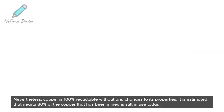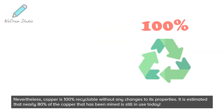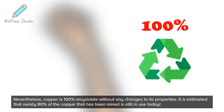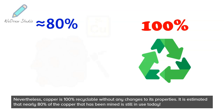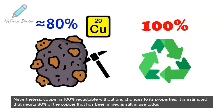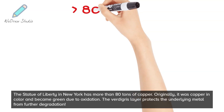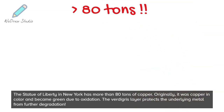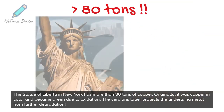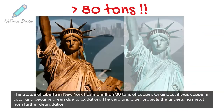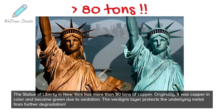Nevertheless, copper is 100% recyclable without any changes to its properties. It is estimated that nearly 80% of the copper that has been mined is still in use today. The Statue of Liberty in New York has more than 80 tons of copper. Originally it was copper in color and became green due to oxidation. The verdigris layer protects the underlying metal from further degradation.